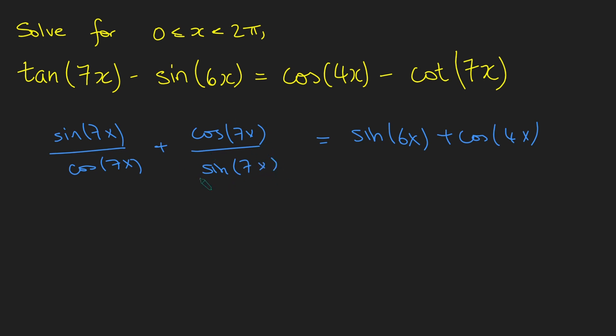Now, this left-hand side here, because these are similar terms and they're both fractions, I'm going to put them under the same denominator. And in doing that, my denominator would just be sine of 7x times cos of 7x. And on the top, I'm going to get sine squared of 7x plus cos squared of 7x. And just using the Pythagorean identity, that is just 1, which is quite nice. And this right-hand side stays the same, sine of 6x plus cos of 4x.